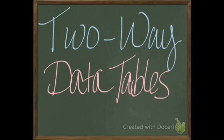Hey everybody, we've been talking about scatter plots and lines of best fit and all kinds of data and statistics, and you guys have been doing really great with it. Today what we want to talk about is something called two-way data tables. Not all of our data is always given to us in numbers — sometimes we have to make them into numbers. We're going to look at it in terms of sports in a particular class.